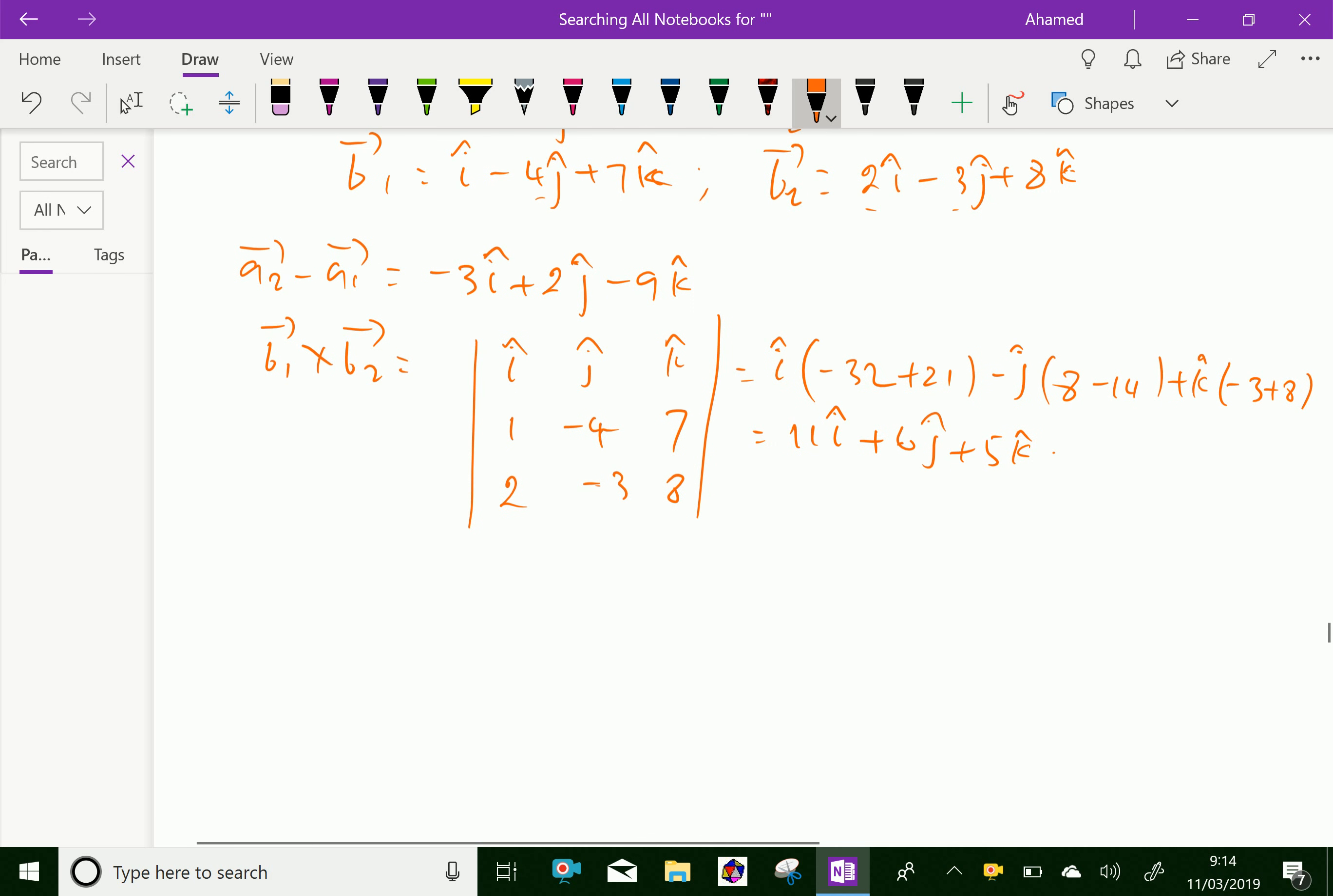Let us find the modulus of b1 cross b2 equal minus 11 square plus 6 square plus 5 square.